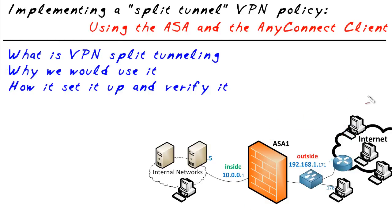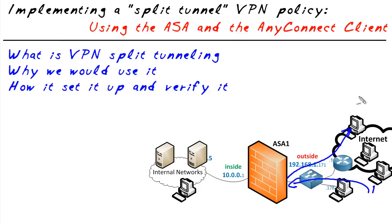For every packet that goes to Bob, the traffic from the streaming server would have to go to the ASA. The ASA would have to encrypt the traffic and send it to Bob through the tunnel just so Bob could receive it.